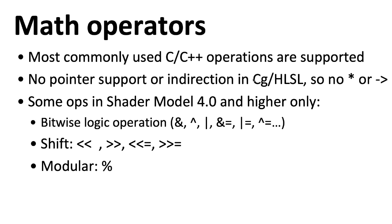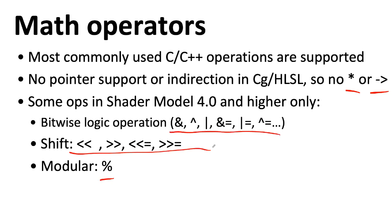Most of the math operations in shader code involve either floating-point values or vectors and arrays of floating-point values. The bad news about shader code is that you don't have pointers, so you can't create sophisticated data structures. The good news is that you don't have pointers, so you don't have pointer bugs. Shader Model 4.0 did introduce integers and various integer operations, but that's mostly used in more general-purpose GPU programming frameworks — for mining bitcoins or cryptography or something.